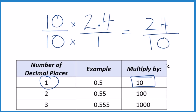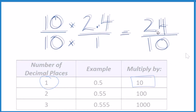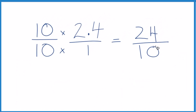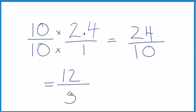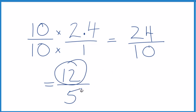And we can simplify this even further. Since they're both even, let's divide the numerator and denominator by 2. 24 divided by 2 is 12, and 10 divided by 2 is 5. So the decimal 2.4 equals the fraction 12 fifths.